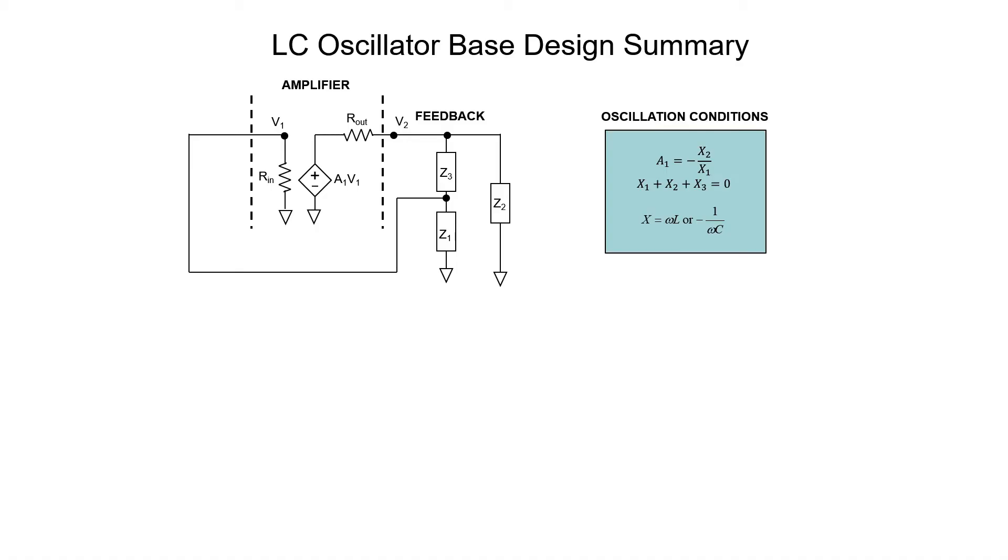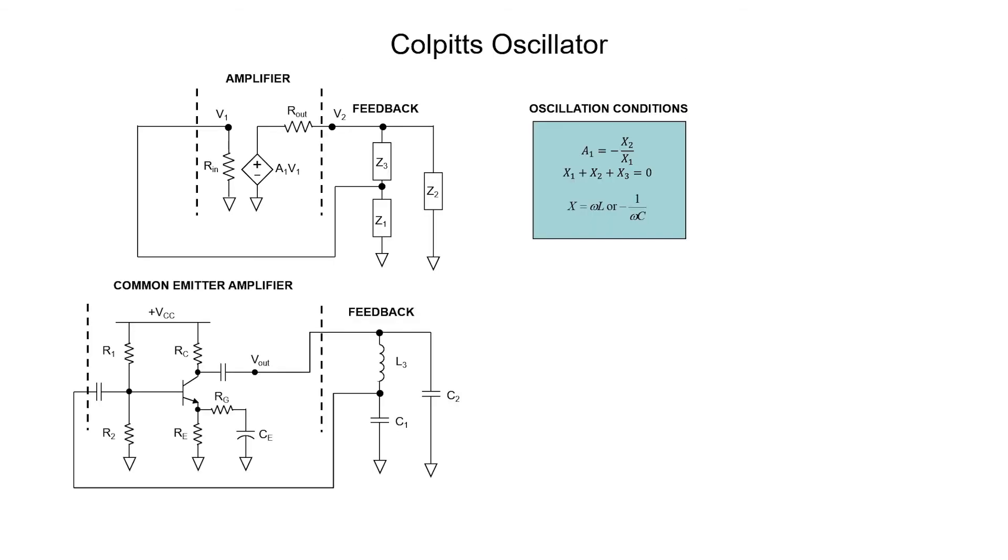Note that the amplifier has to be inverting. In the box is now a summary of the oscillation conditions which we just derived. In order to design a practical circuit, we need to substitute in inductors or capacitors for these reactive elements. The first design I'm going to describe is called the Colpitts oscillator. In the Colpitts oscillator, reactive elements 1 and 2 are capacitors, and reactive element 3 is an inductor.